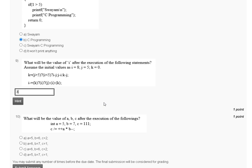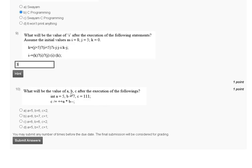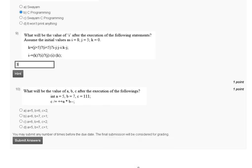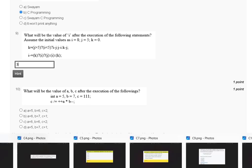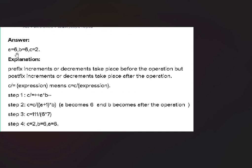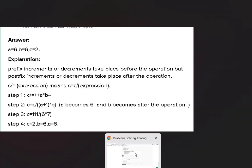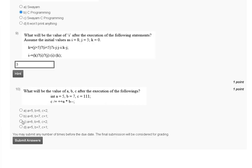Question number ten: what will be the values of a, b, and c after execution of the following code? Given: int a = 5, b = 7, c = 111. After execution, a equals 6, b equals 6, and c equals 2. The correct answer for question number ten is option C.